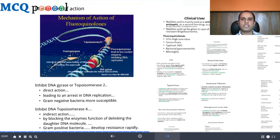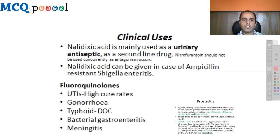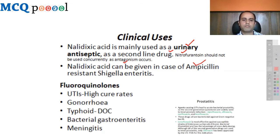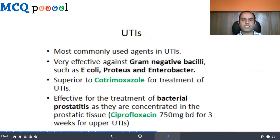Clinical uses: for first-generation quinolones, nalidixic acid is primarily used as a urinary antiseptic and is a second-line drug after nitrofurantoin. Nitrofurantoin and nalidixic acid should not be used concurrently as antagonism is known. Nalidixic acid can also be given for ampicillin-resistant Shigella enteritis. Fluoroquinolones can be used for UTIs with high cure rates, gonorrhea, typhoid (drug of choice), bacterial gastroenteritis, meningitis, and prostatitis.